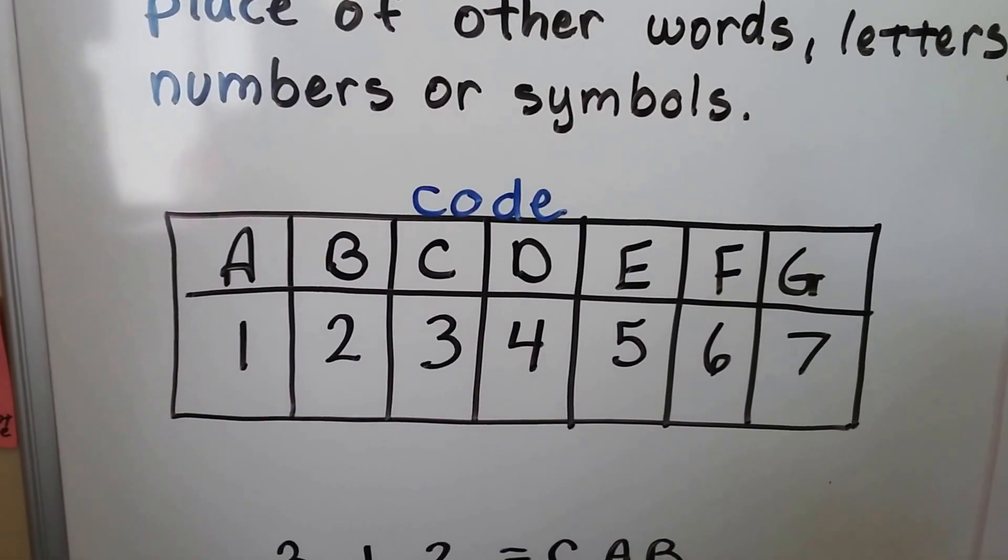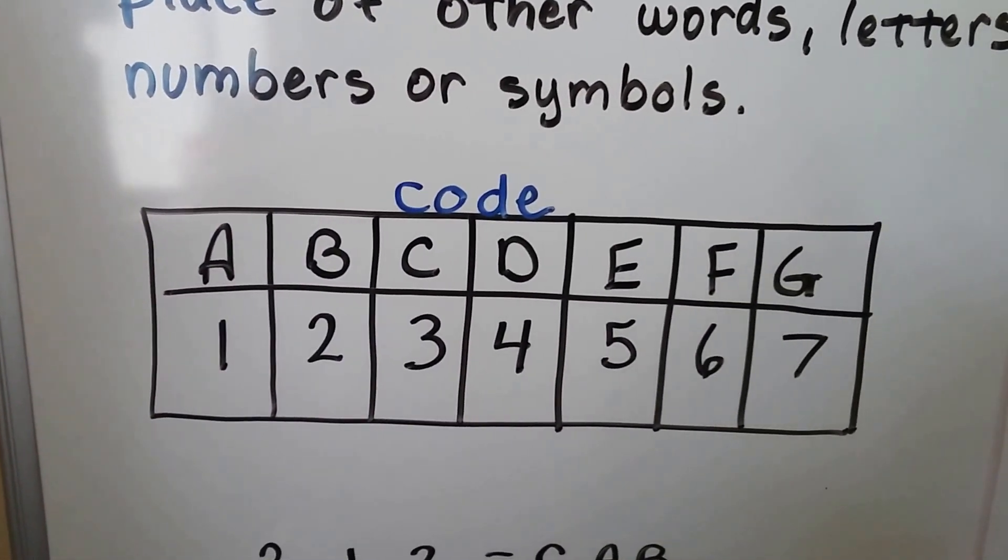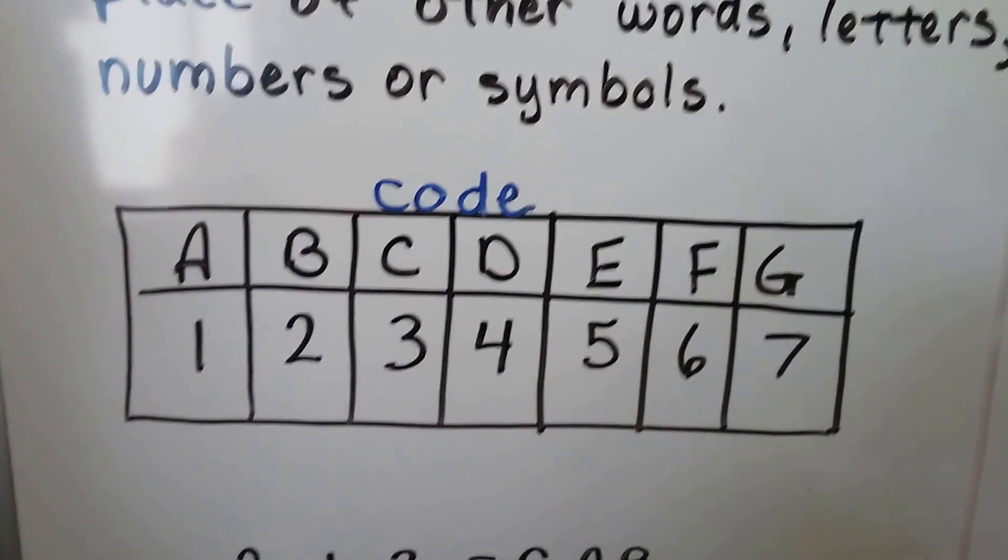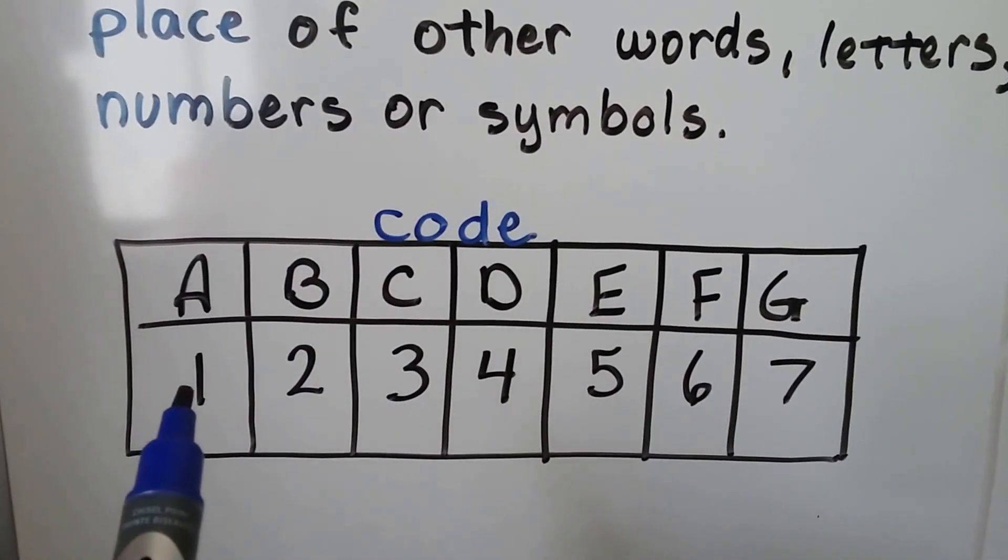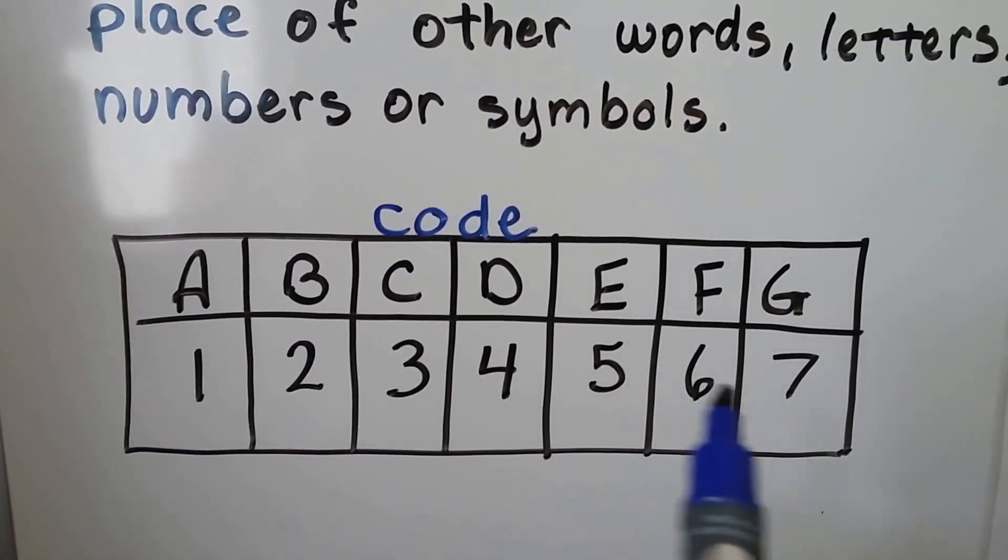Here we have a little code. You can see that we have A, B, C, D, E, F, G, and respectively they stand for 1, 2, 3, 4, 5, 6, 7.